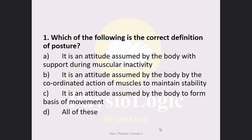MCQ number 1: Which of the following is the correct definition of posture? Option A: it is an attitude assumed by the body with support during muscular inactivity. Option B: it is an attitude assumed by the body by the coordinated action of muscles to maintain stability. Option C: it is an attitude assumed by the body to form the basis of movement. Option D: all of these. The correct answer is Option D — all of these. All three options are definitions of posture.